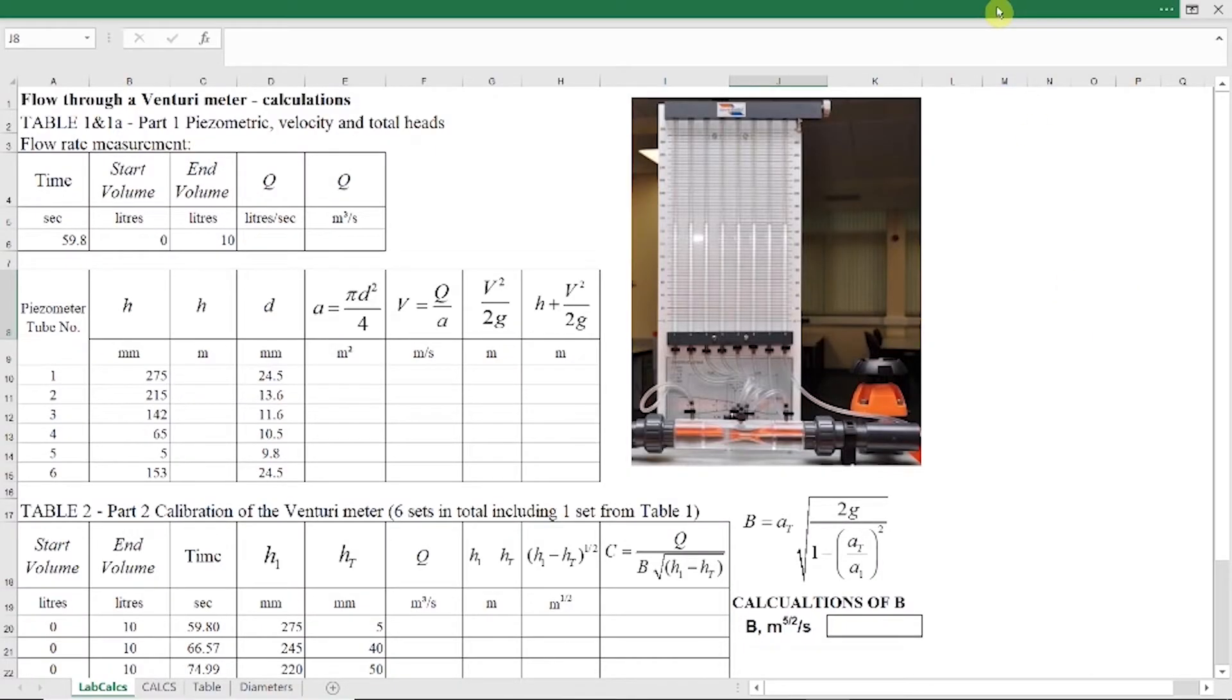I already prepared my Excel file where I have experimental data tables, and also I have inputted experimental data I collected in the lab. Let's start with part number one. For part number one, I need to calculate velocity head and total head, and then see how all three heads, which is piezometric head, velocity head, and total head, change along the Venturi meter.